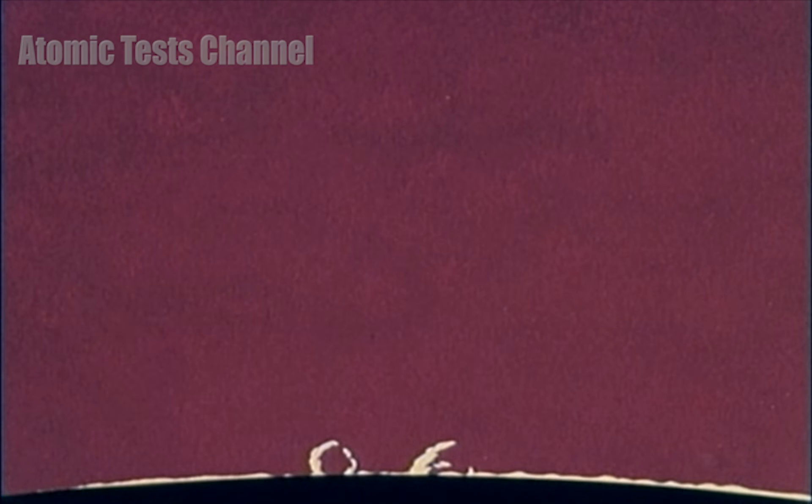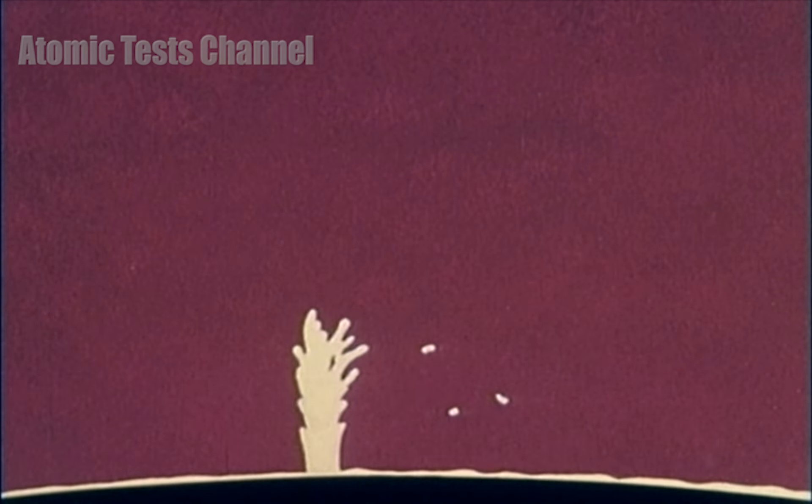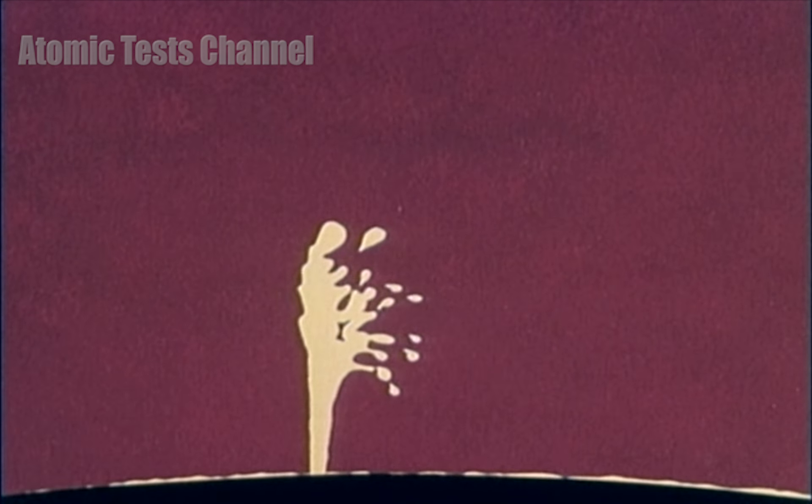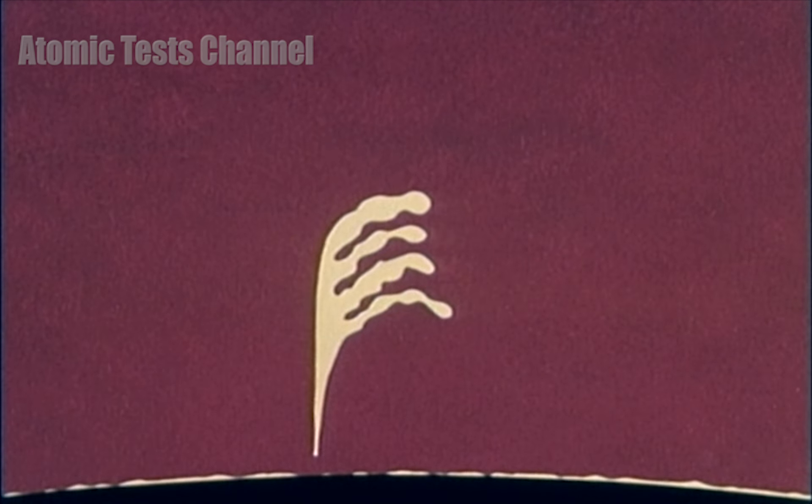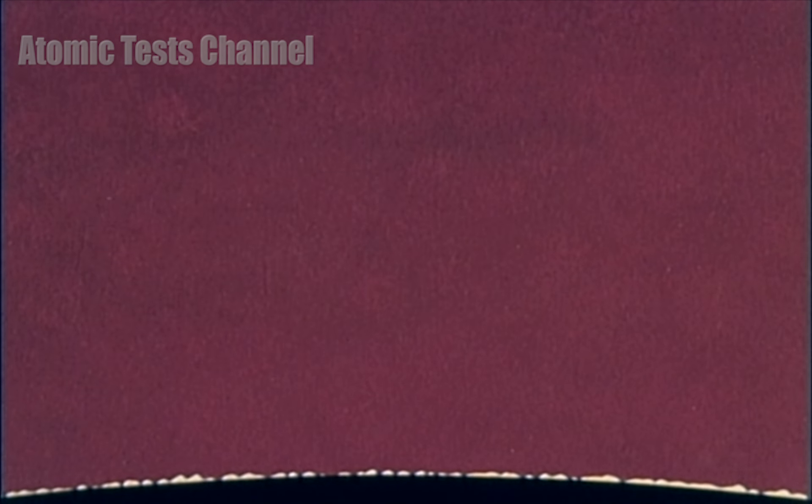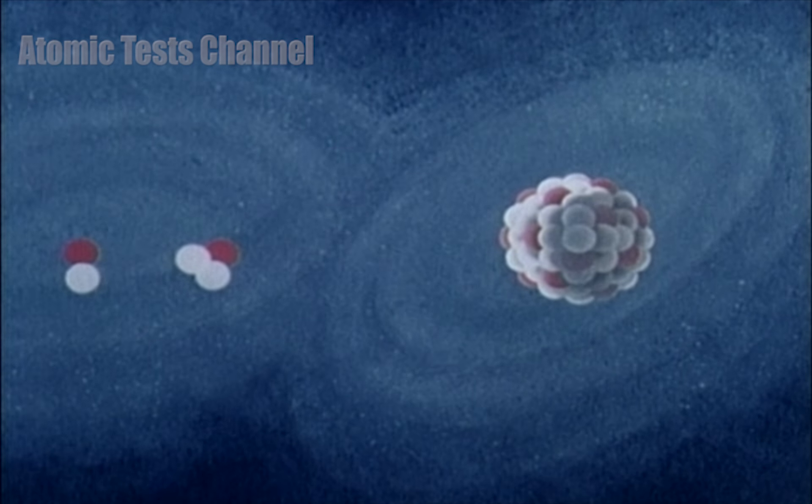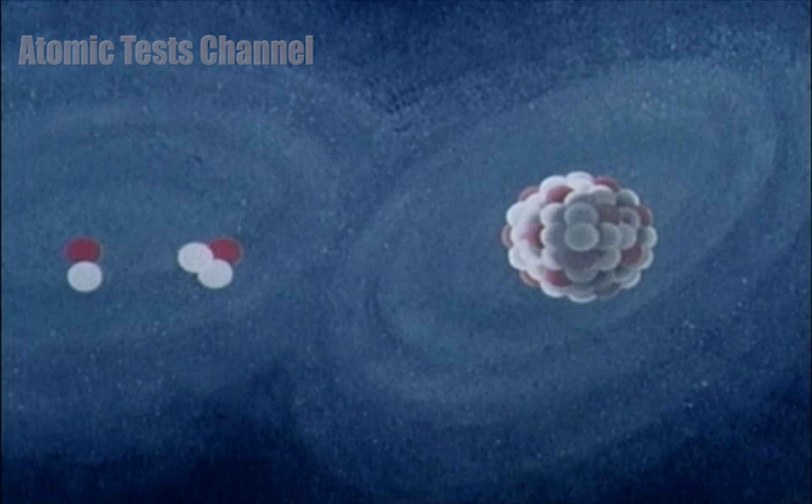The sun is constantly creating and releasing energy created through a fusion process. Fusion is the second process through which energy is liberated from the nuclei of atoms. The process of fusion is the reverse of fission.